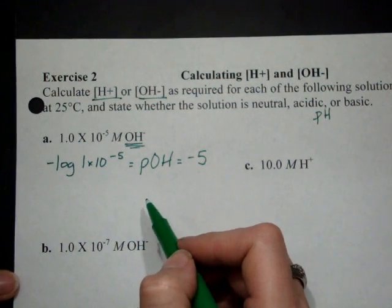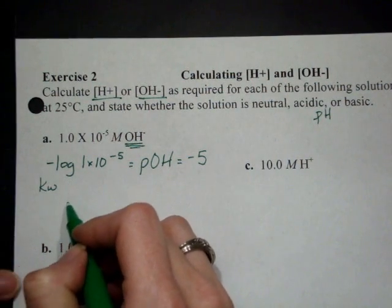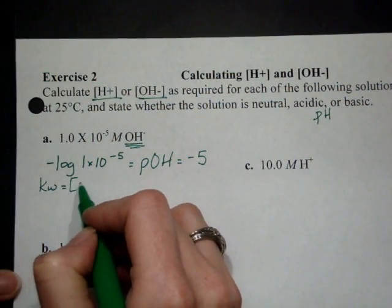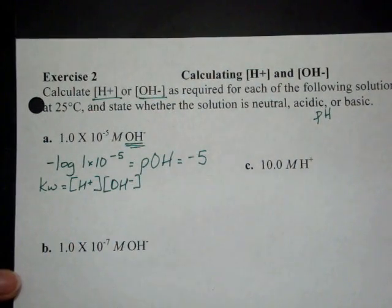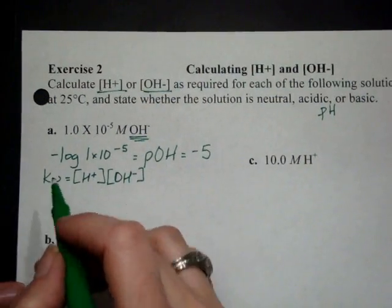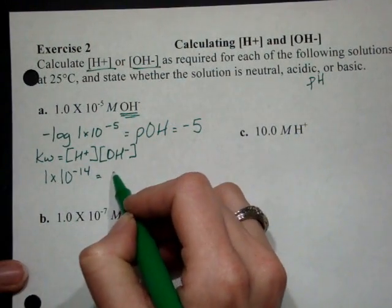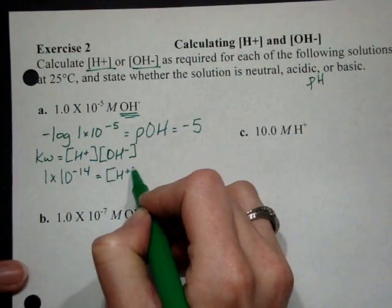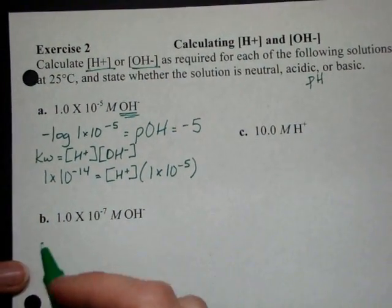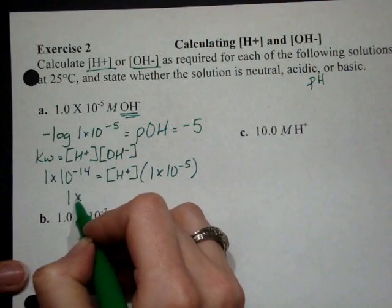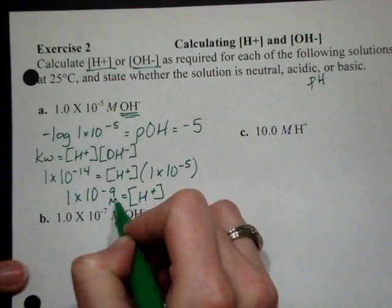To get the hydrogen concentration, I have two possible avenues. I can either use Kw, which is the hydrogen concentration times the hydroxide concentration, and solve for the missing one. So I'm going to go ahead and do that for this one. So Kw is 1 times 10 to the negative 14 equals the hydrogen concentration times 1 times 10 to the negative 5, which would give me 1 times 10 to the negative 9 equals the hydrogen concentration molar.